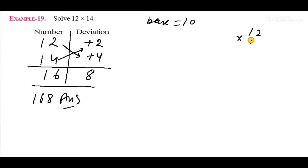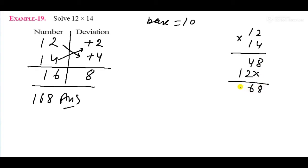Now let us verify with simple multiplication: 12 into 14. 4 times 2 is 8, 4 times 1 is 4, cross multiply, and 1 times 4 is 4. The result is 168. This answer and the Nikhilam answer both tally, so our multiplication is correct.